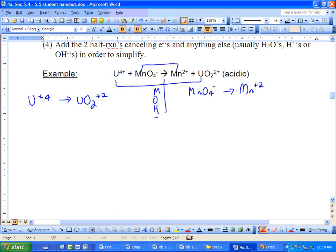M, major species. 1 Mn, 1 Mn, done. 4 O's on the left, 0 O's on the right. So you balance the O's with water: 4 H2O's. 0 H's on the left, 8 H's on the right. So I've got to add 8 H pluses.